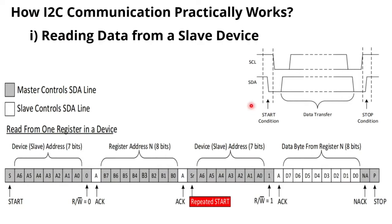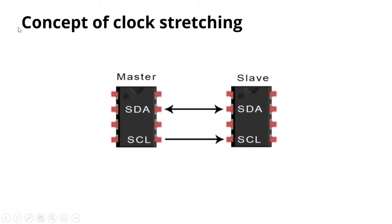Regarding clock stretching: if the master is operating at high frequency and the slave cannot respond in time — because it needs to fetch data from memory — the slave pulls down the SCL line to low while it is busy. This prevents data corruption by pausing the communication until the slave is ready.